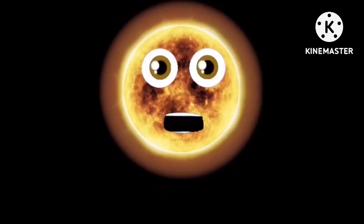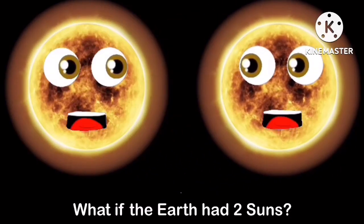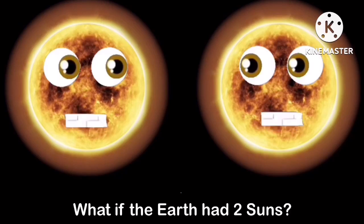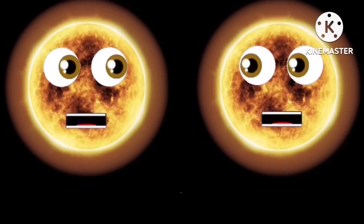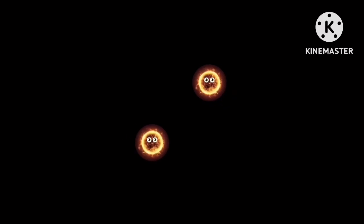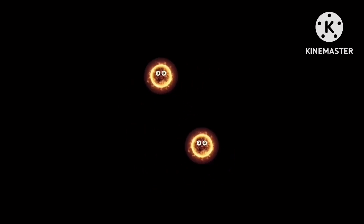What would happen if the Earth had two suns? Let's take a look at the Earth with a binary star system. A binary star system is two stars that are bound by gravity and orbit each other.